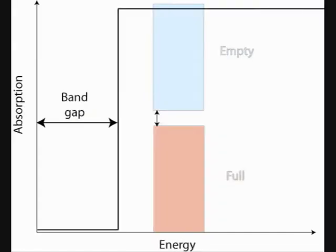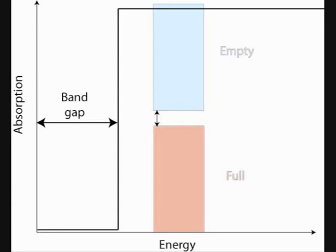Therefore, when we shine light of different energies onto my sample and detect which light is passing through, we can see the low energy light that is not being absorbed, and then the light starts being absorbed when there is enough energy to excite the electron over the barrier. So here is an example of my work — nitride semiconductors with different barrier heights, and here you can see that the photons are being absorbed at different energies.